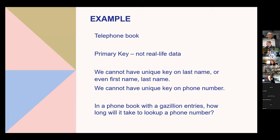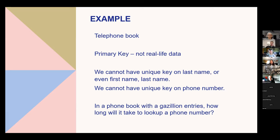For a telephone book example: in a relational database, we always have some type of primary key — a unique value for each record, typically a sequential or randomly generated number. We cannot have a unique key on last name or even first and last name because of duplicates, nor on phone numbers since family members sometimes share them. So in a phone book with a huge number of entries, it'll take a very long time to look up a phone number.